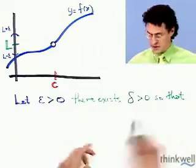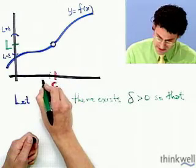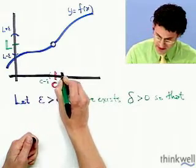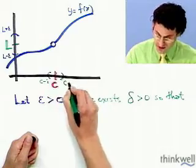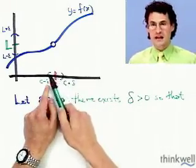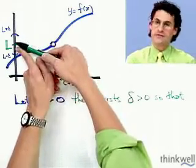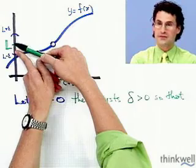So that points that are within delta, so let me just put in here, this is c minus delta, and this would be c plus delta, so points that are within delta of c, they're all going to get mapped inside of this very, very tiny little region surrounding L.